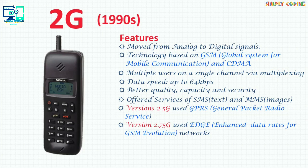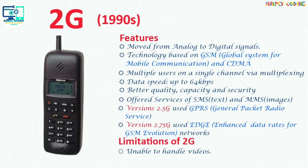2.75G used EDGE, which was Enhanced Data Rate for GSM Evolution. The limitation of this generation was that it was unable to handle complex data such as videos, and it required strong digital signals to help mobile phones work.